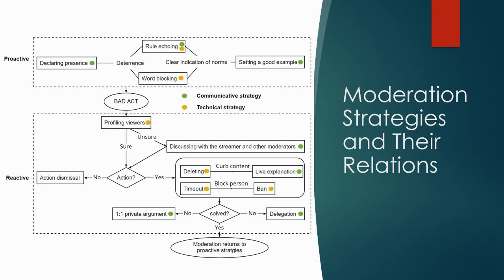After moderating a bad act, they would usually review the chat history to understand viewers' behaviors. If they were not sure about the punishment, they would ask other moderators or the streamer for help. If they were sure what to do after profiling or after discussion, they would decide to either dismiss and ignore those messages or take a series of actions to curb the content or block the violators. Sometimes certain viewers were not satisfied with the punishment and would argue with the moderator privately. They could also keep harassing the stream with multiple accounts, so moderators have to ask other viewers to report the violators to the platform. The moderation then ends and goes back to proactive strategies.